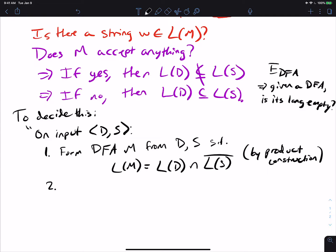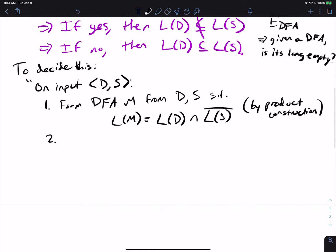And if you hit a final state at some point, then the language is not empty. If you never hit a final state, its language is empty. So then what we do is run the decider for E DFA on the input M. So because it's a decider, it must say yes or no.